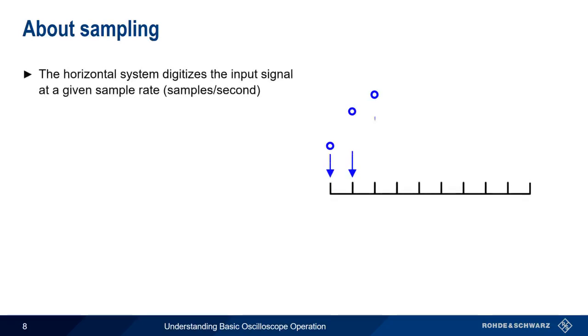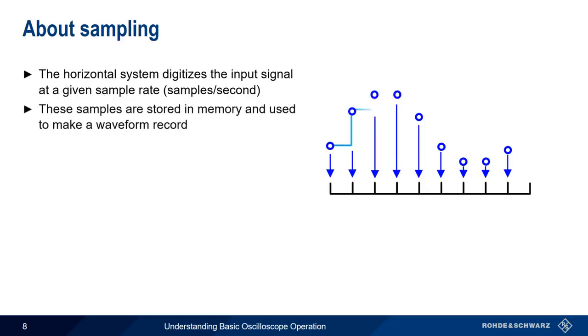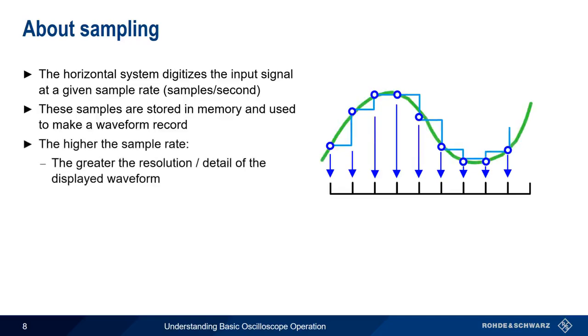The more important aspect of the horizontal system is something called sampling. The horizontal system digitizes the input signal at a given sample rate, in samples per second, or at every sampling interval. Samples are stored in memory, and together these make up a so-called waveform record. As we increase the sample rate, we get better resolution and more detail of the displayed waveform. And this in turn increases the probability that we'll see or catch infrequent events.